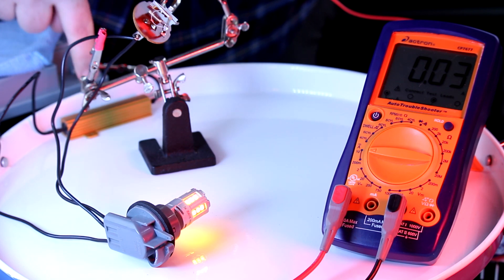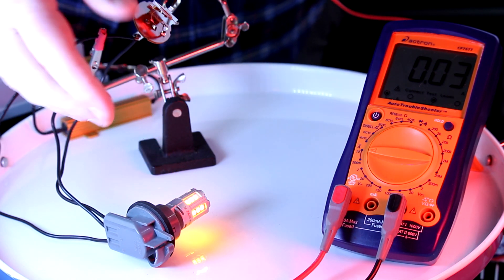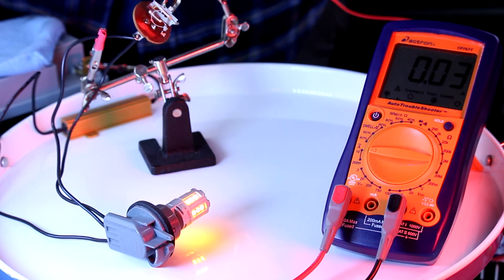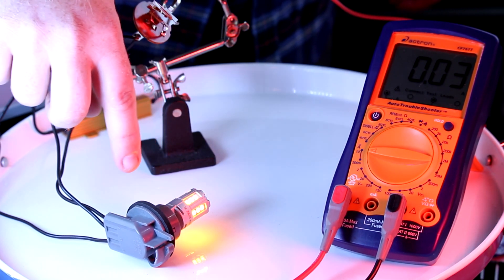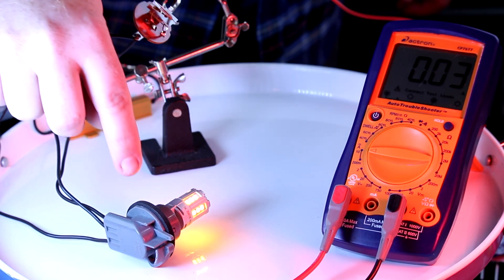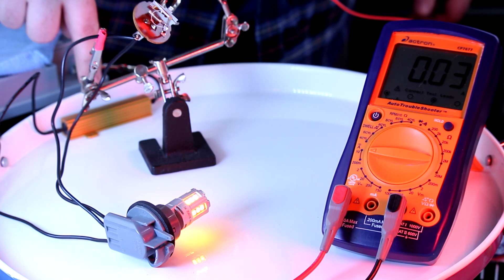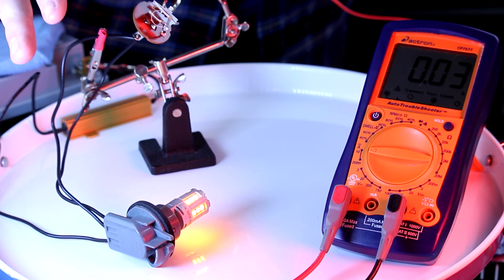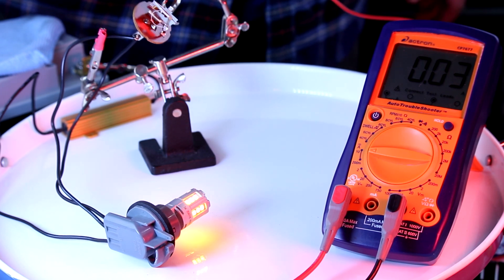But we still have this resistor in series with this LED bulb, and it looks just as bright, and the amperage is just about the same. The built-in resistance of this LED is so high that the six ohms that this resistor adds is barely a scratch on the surface of it, and you don't get much of a change in amperage.